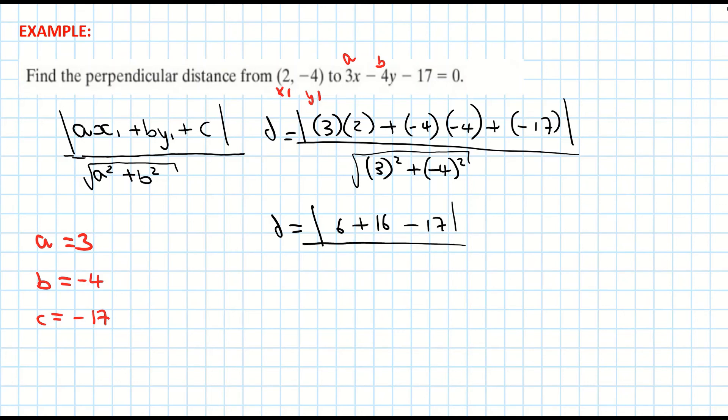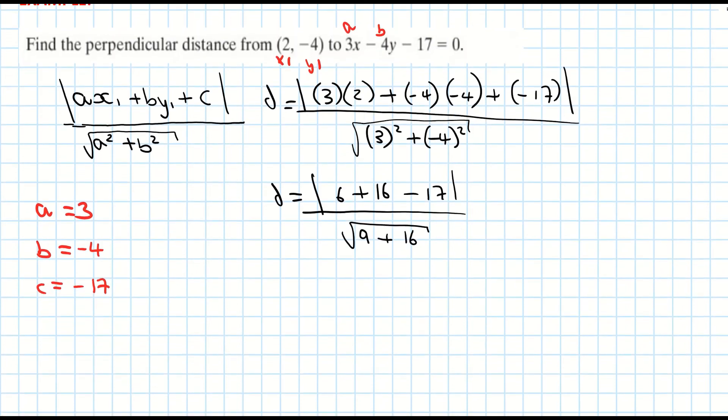All over the square root of 3 squared is 9. 4 squared, which is -4 by -4, which is positive 16. Just be careful if you're using a Casio calculator that that goes into brackets. Otherwise, your calculator will give you a negative, which we don't want.